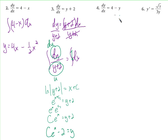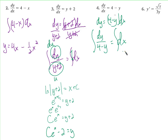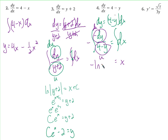Now dy/dx equals 4 minus y — really similar problem. Multiply both sides by dx: dy equals (4 minus y) dx. Divide both sides by (4 minus y): dy over (4 minus y) equals dx. Take the antiderivative of both sides. The antiderivative of dx is just x. For the left side, if u equals 4 minus y, its derivative is negative dy, so we put a negative there and a negative there — u-substitution skills coming into play.